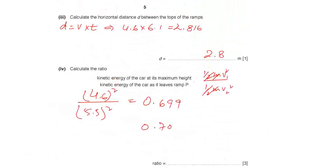Calculate the ratio of the kinetic energy of the car at its maximum height. So the formula of kinetic energy is half m v². Kinetic energy in numerator and denominator, both mass will be unchanged. 1 over 2 is constant. So it will be cancelled out, only the velocity at the maximum height and velocity when it leaves.